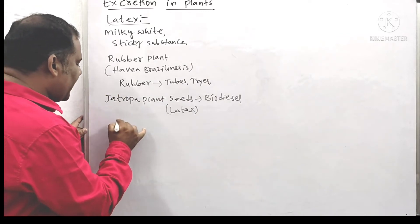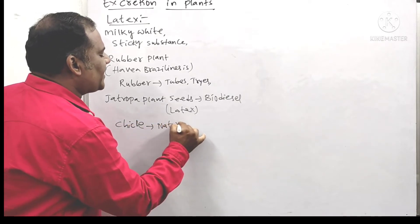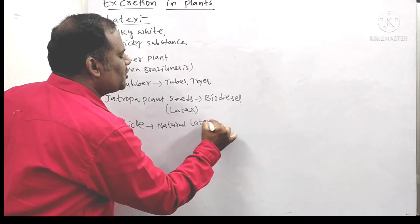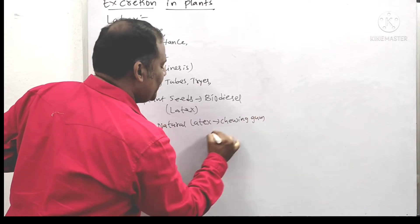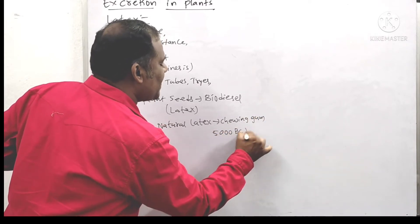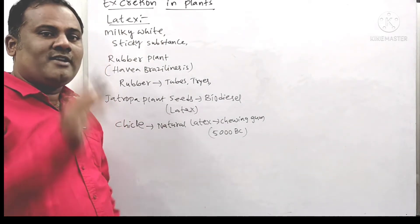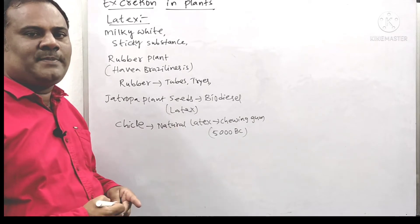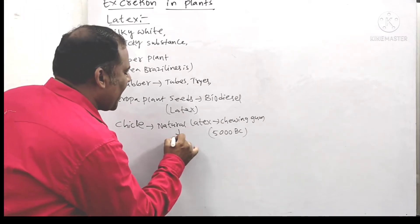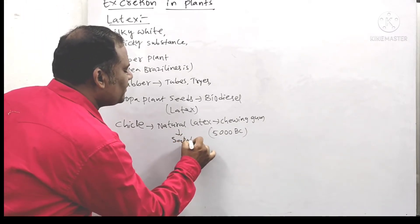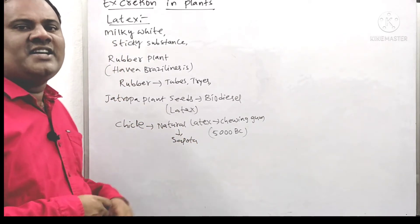Next is chicle — a natural latex which is useful as chewing gum. This has been known from 5000 BC onwards. Chewing gum is not a modern product — since 5000 BC, chewing gum has been produced from the natural latex of plants like Sapodilla. That natural latex is called chicle.